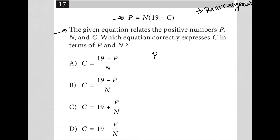If I have P equals N times 19 minus C, but I want to have C equals, I want to isolate C. What process would I go through to get C by itself? Well, I would start off with dividing by N on both sides.